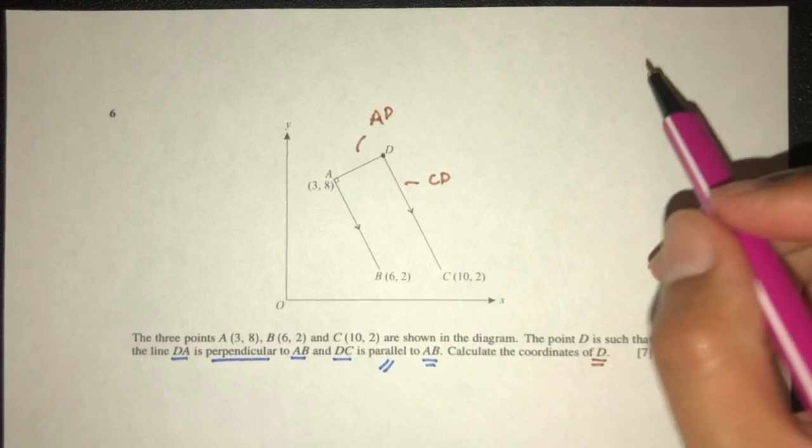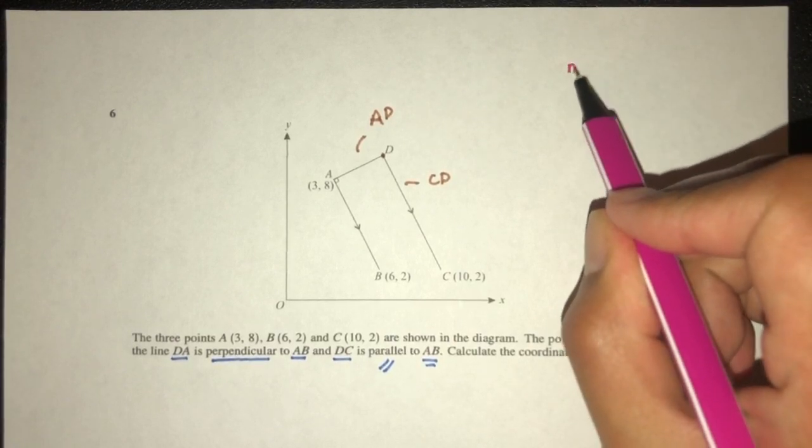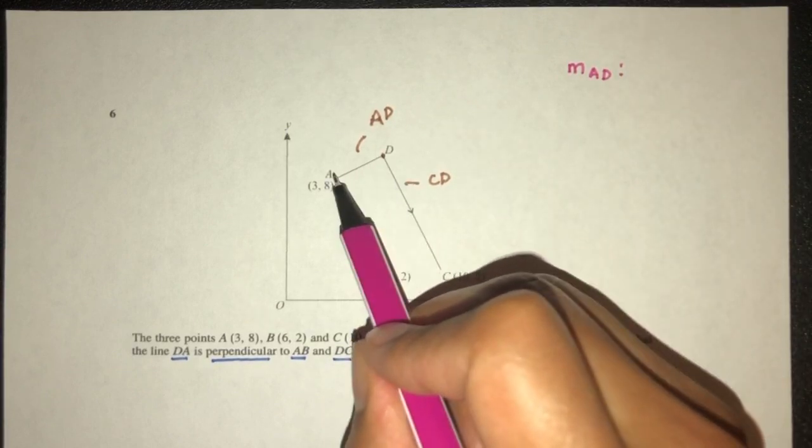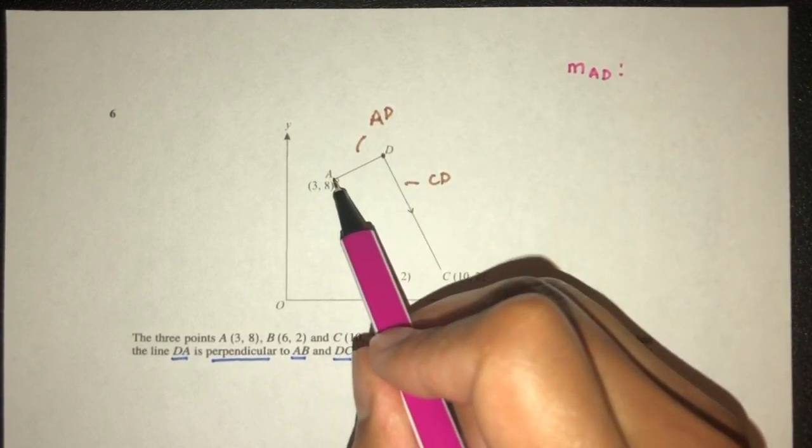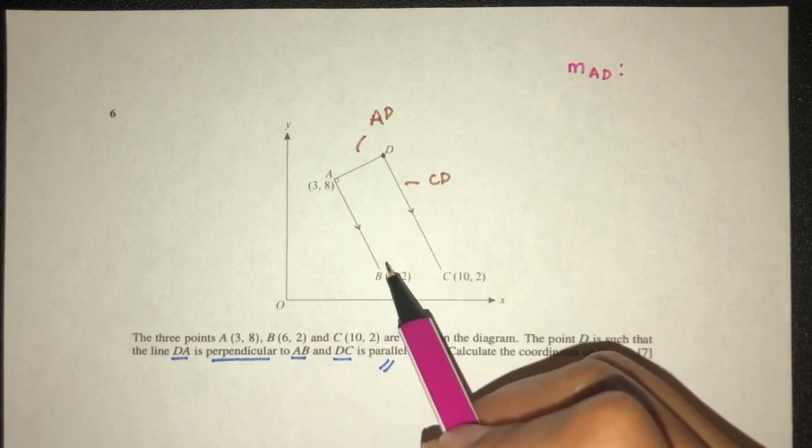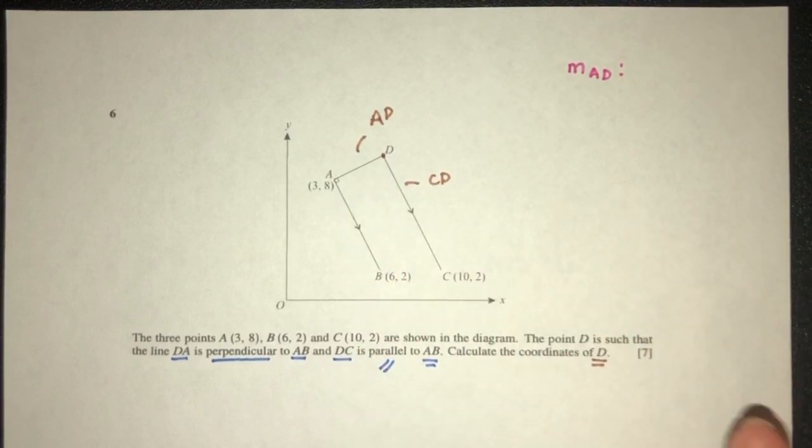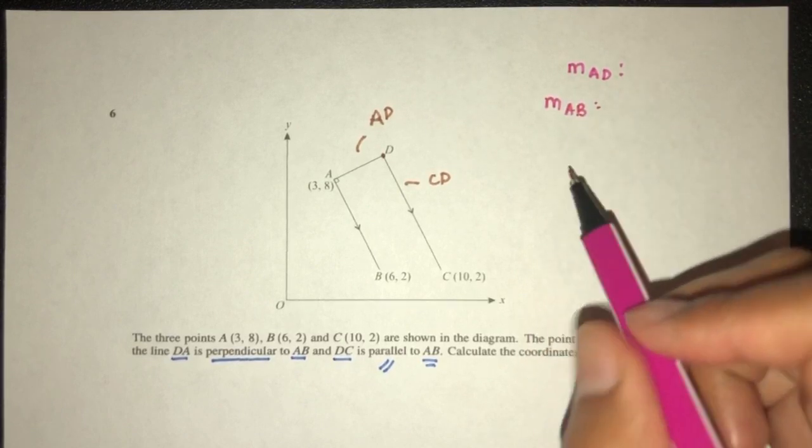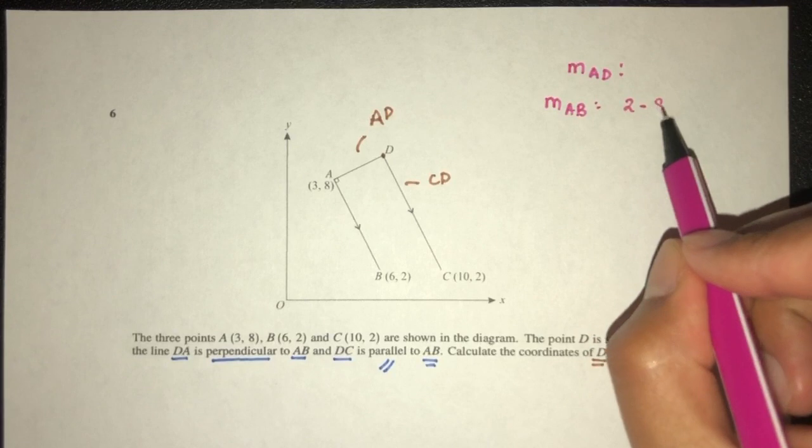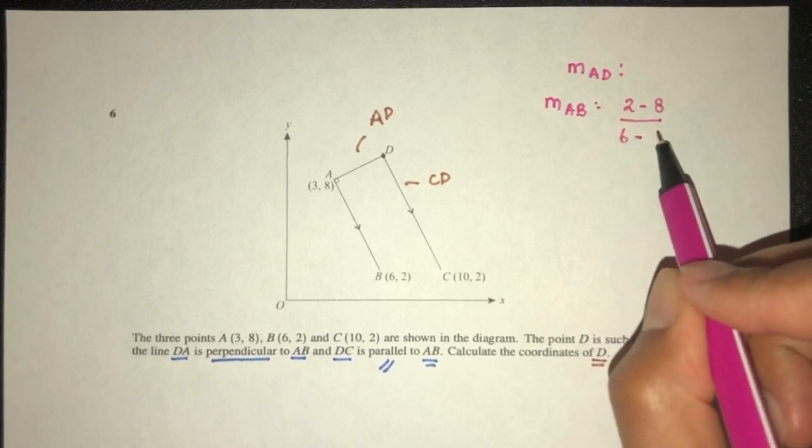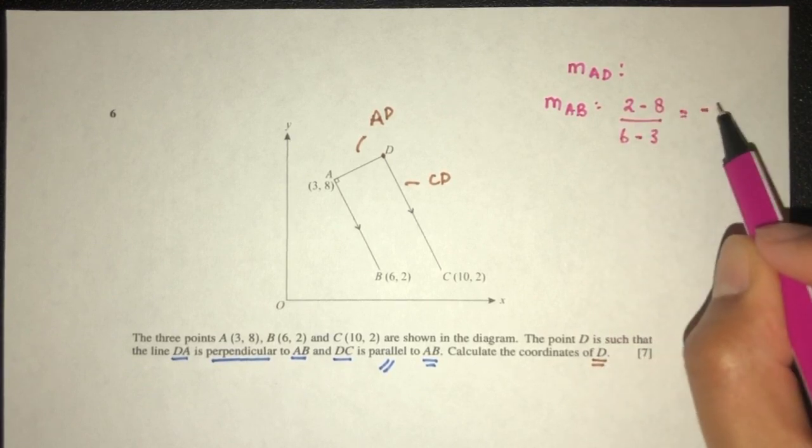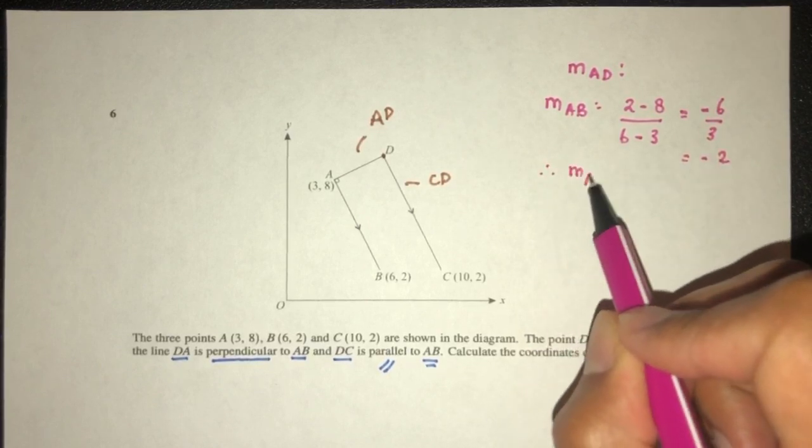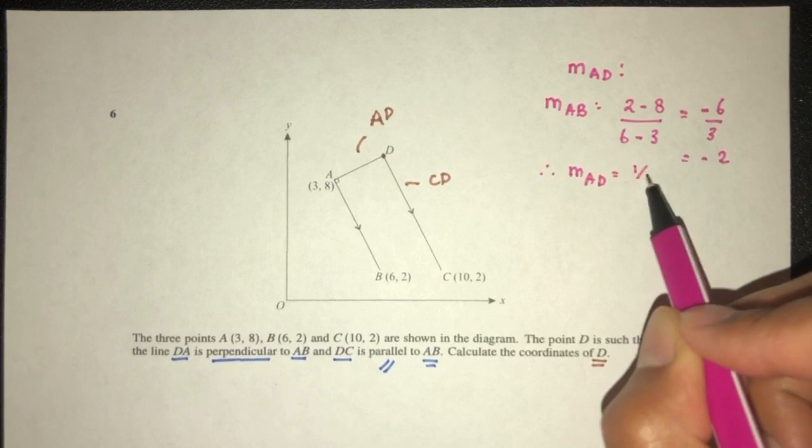To find the equation of AD, obviously we must first find the gradient of AD. Because it is at 90 degrees to this line, we understand that we can first find the gradient of AB and then derive the gradient of AD. What is the gradient of AB? That will be Y2 minus Y1 over X2 minus X1. That will be minus 6 over 3, which should be minus 2. So finally, gradient of AD should be the value of half.